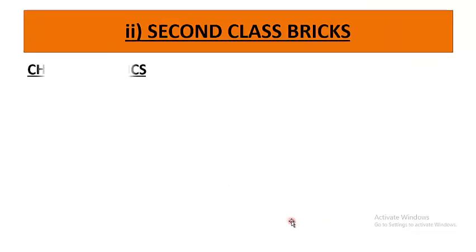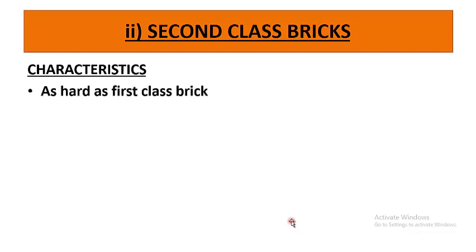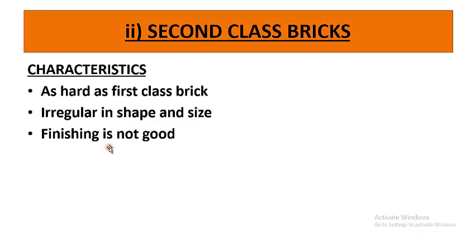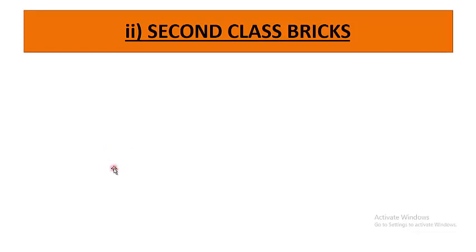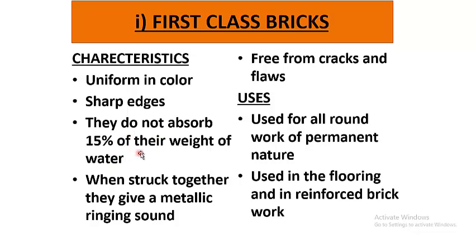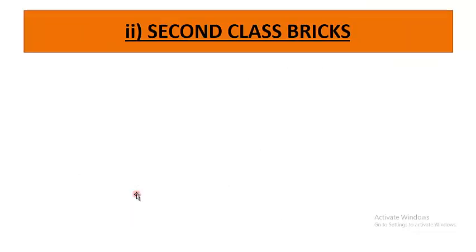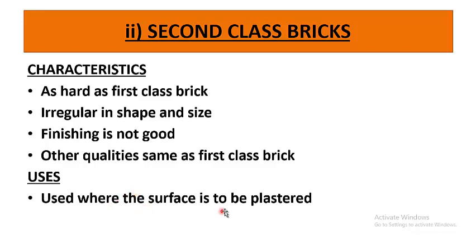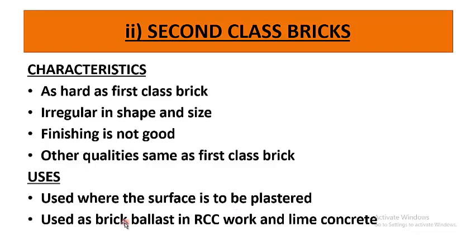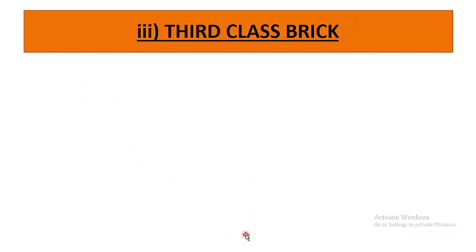Second class bricks: characteristics are that they are as hard as first class bricks but irregular in shape and size, and their finish is not as good as first class bricks. They do not absorb more than 15% of their weight in water, and they also produce a metallic sound when struck together. Uses: they are used where the surface is to be plastered, as brick ballast in RCC work, and in lime concrete.